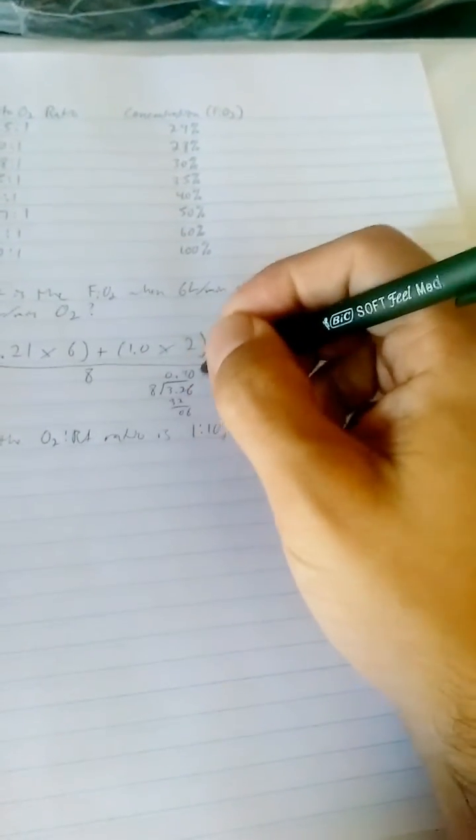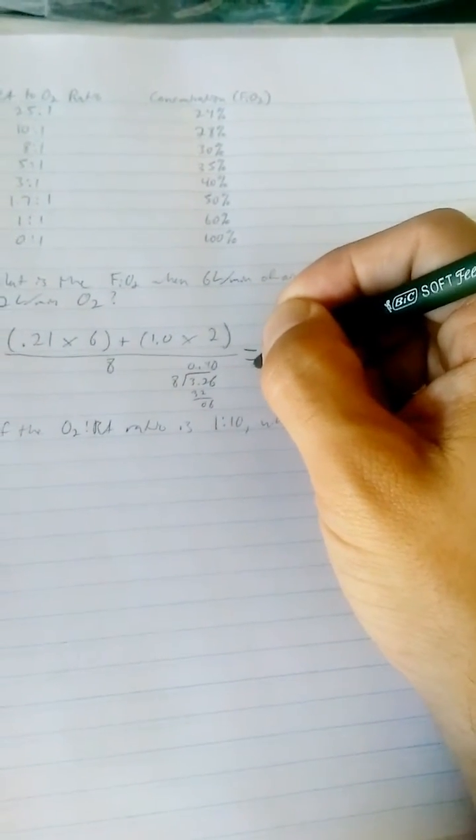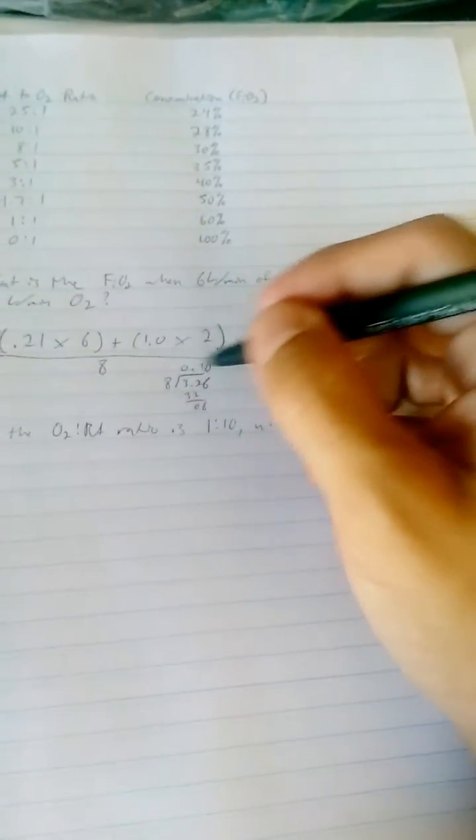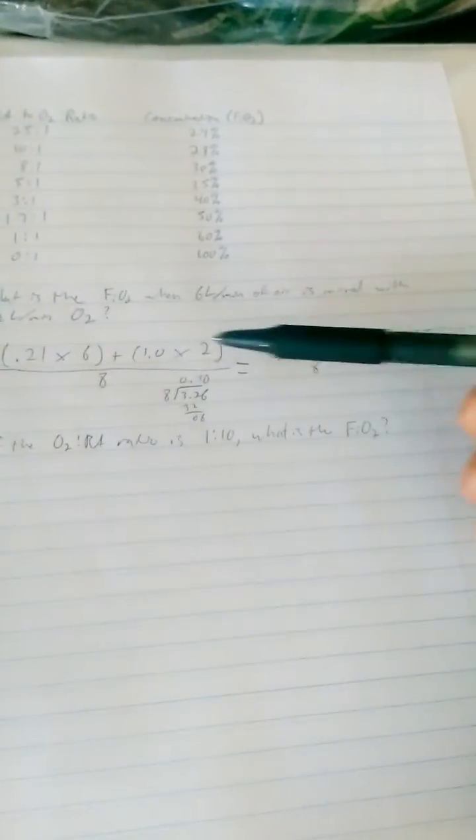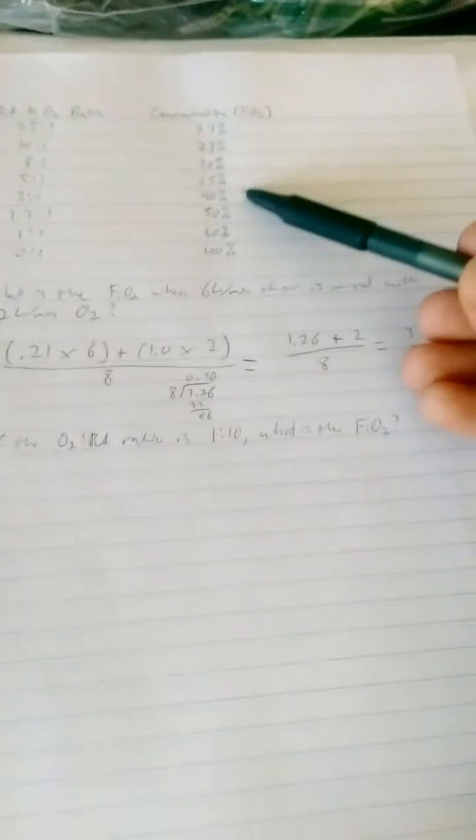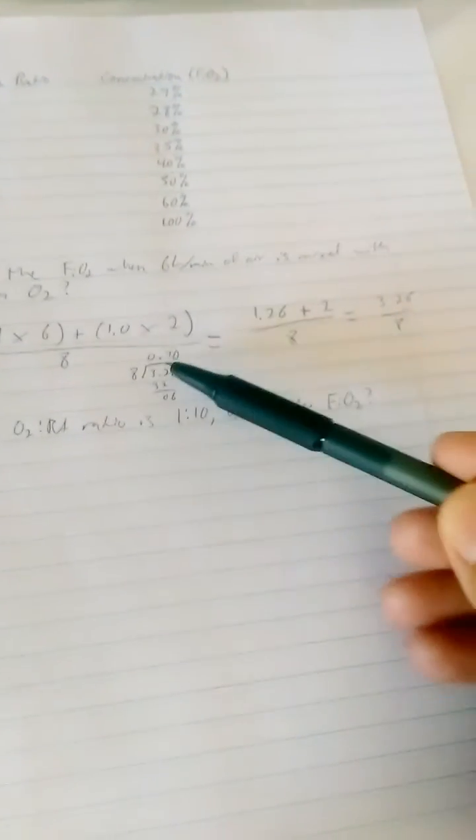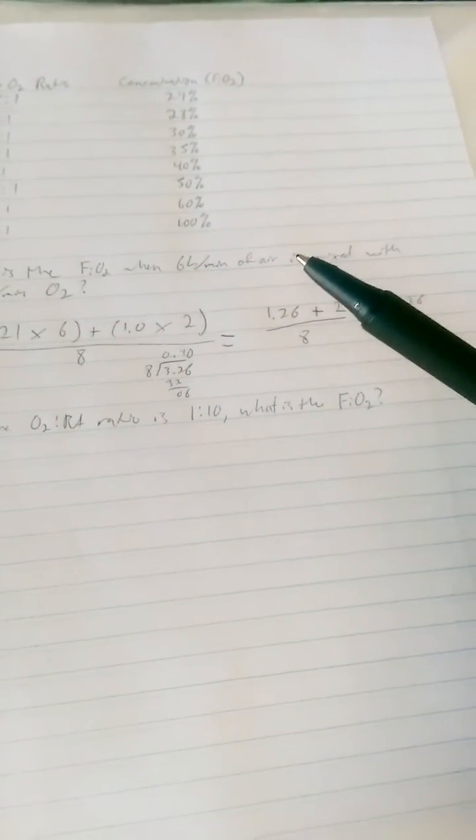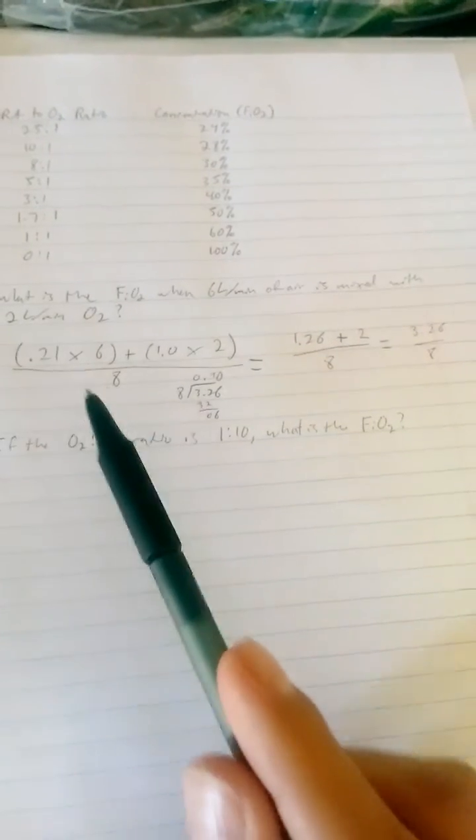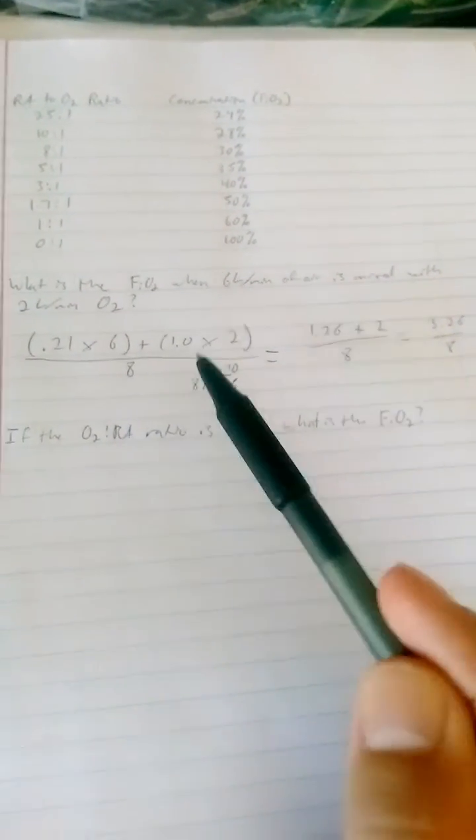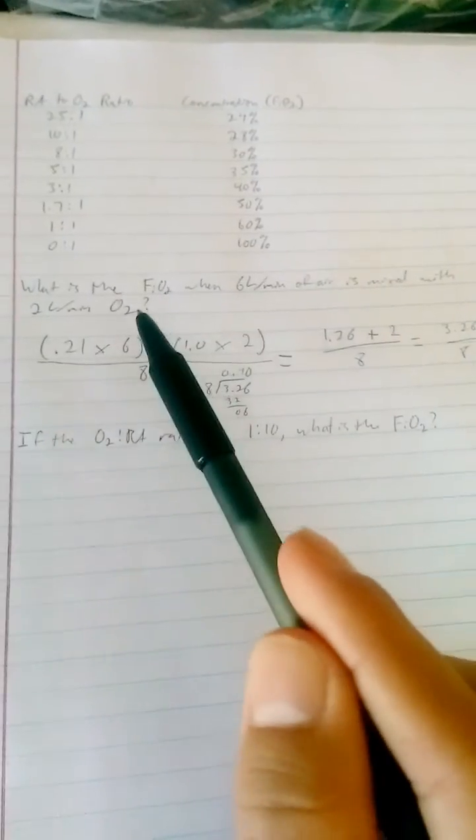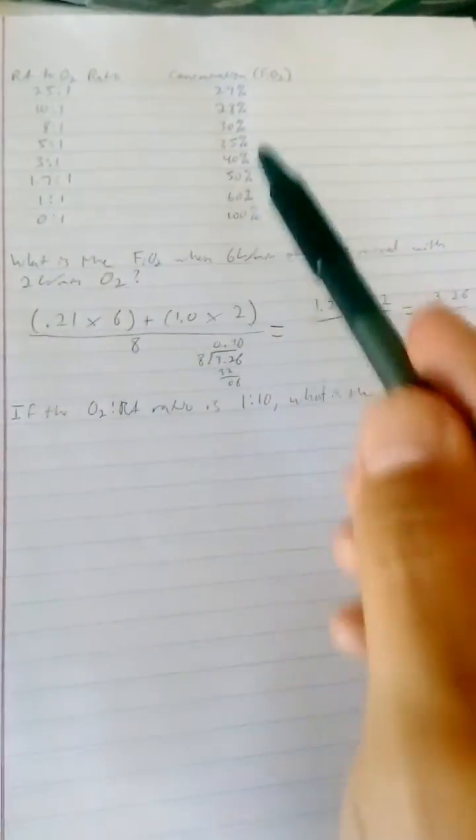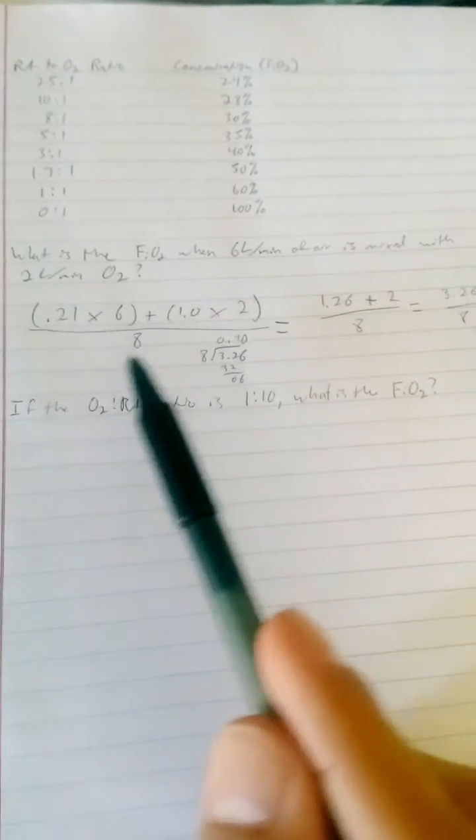Now I can keep going, but I can tell you right now that, as I already proved up here, a 1 to 3 ratio is already dictated to be 40%. There's your answer. So when you're given a ratio and not specifically told the FiO2, and you don't have this memorized, you can work through it using this formula.